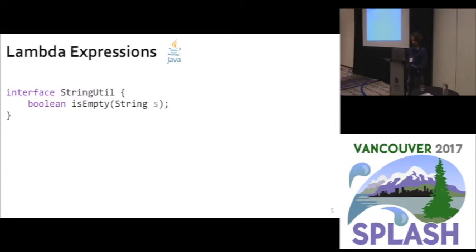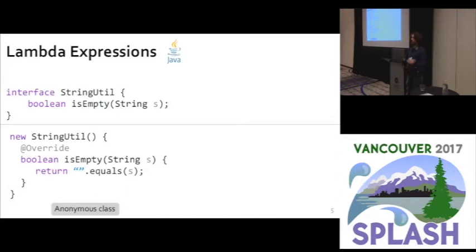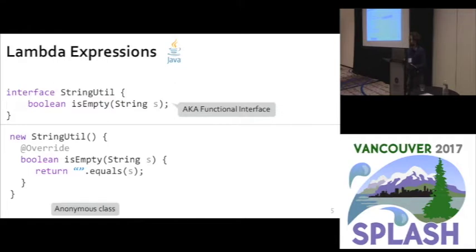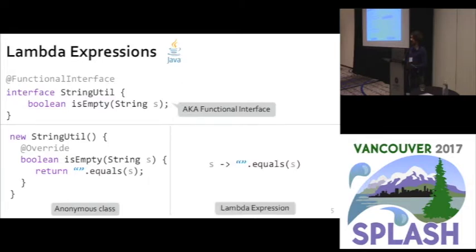Let's take a quick look at a lambda expression in Java. Say you have an interface and want to implement its single method — for instance, checking whether a string is empty. You can implement it using an anonymous class, returning a Boolean expression that compares the string with the empty string. Note that this is a single abstract method interface — also called a functional interface in Java 8 terminology. You can then implement it using a lambda expression, which does the same thing but is much shorter.